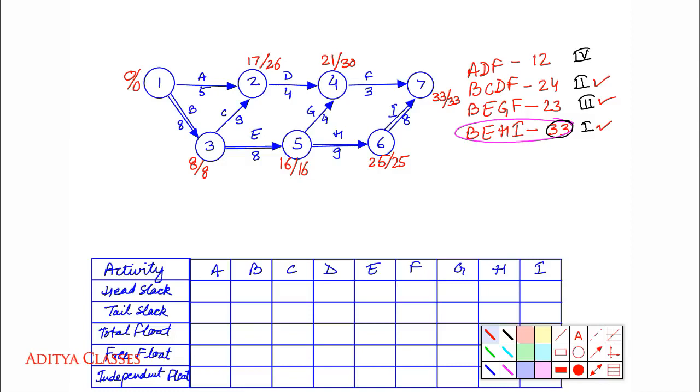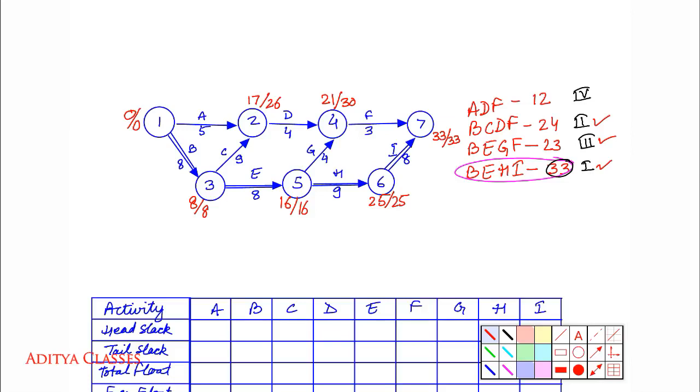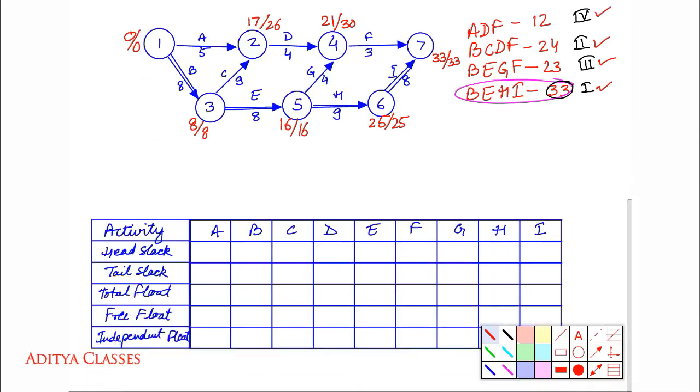Fourth one is ADF, the top path. Let us see: 0 plus 5 is 5. No, there can be no 5. Instead it will be 17. 17 and 4 is 21. 21 and 3 is 24. Should I write 24? No, it will be 33. Then the backward pass: 33 minus 3 is 30. 30 minus 4 is 26. 26 minus 5 is 21. No, there will be no 21. Rather it will be 0, the smaller of the values. So now we are done with forward pass and backward pass on all paths.